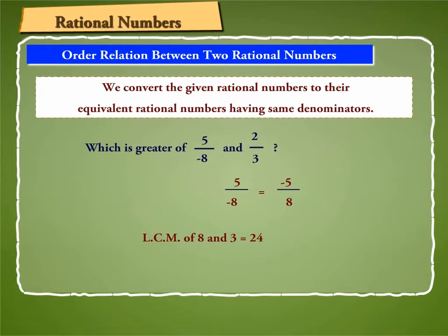The LCM of 8 and 3 is 24. So convert the given rational numbers to their equivalents having 24 as denominator.